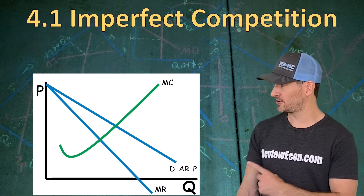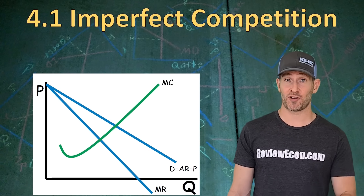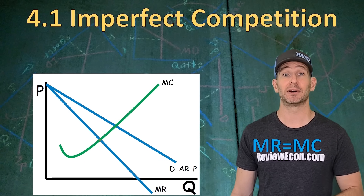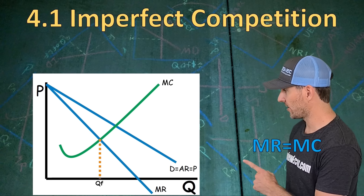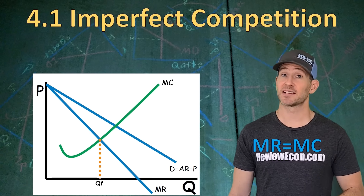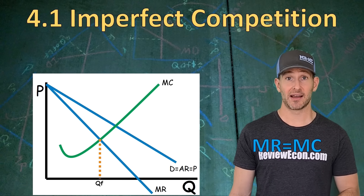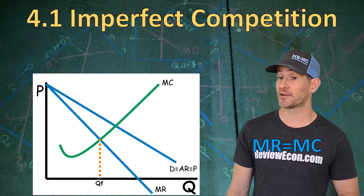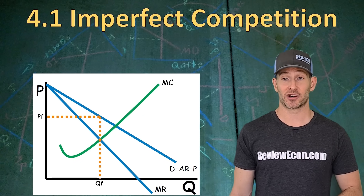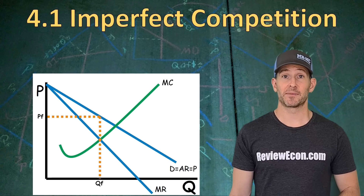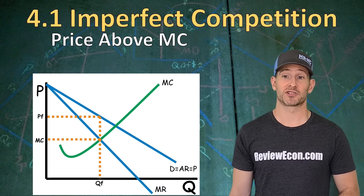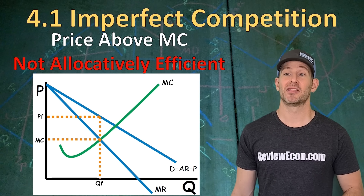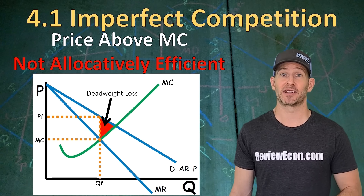If we add a marginal cost curve to this graph, we can find the profit maximizing quantity. All firms profit maximize where marginal revenue equals marginal cost. There is our profit maximizing quantity. This firm doesn't have to put a price at MR equals MC — the demand curve shows consumers' willingness to pay, so we get the price all the way up at that demand curve above. For imperfectly competitive firms, they price above marginal cost, meaning these firms are not allocatively efficient and there will be deadweight loss in imperfectly competitive markets.